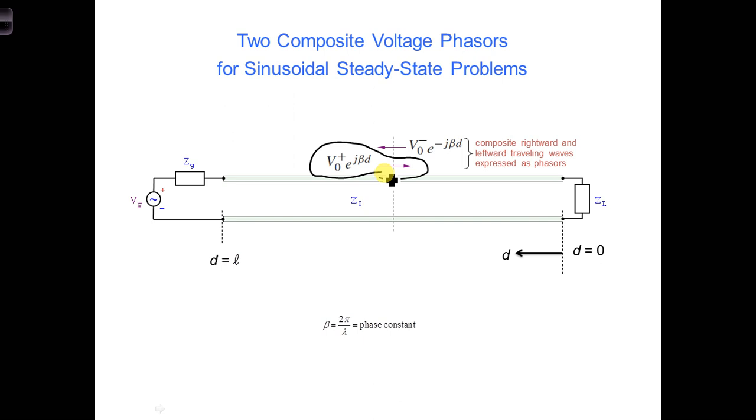The other voltage phasor represents all the leftward traveling waves going towards the generator. That's this one right here. The V1 minus, V2 minus, V3 minus, and so forth waves. That is the V0 minus voltage phasor. All those combined give you that phasor.